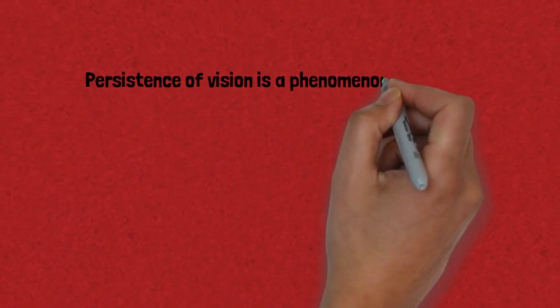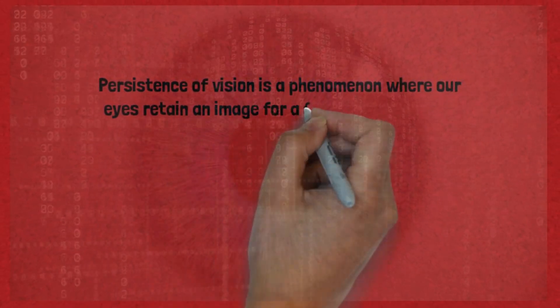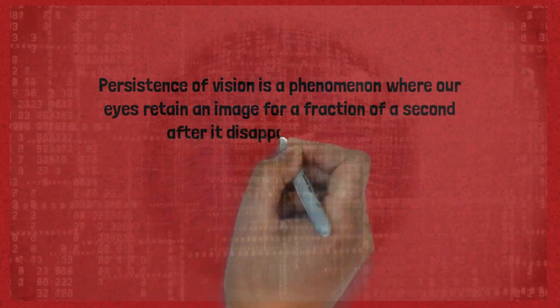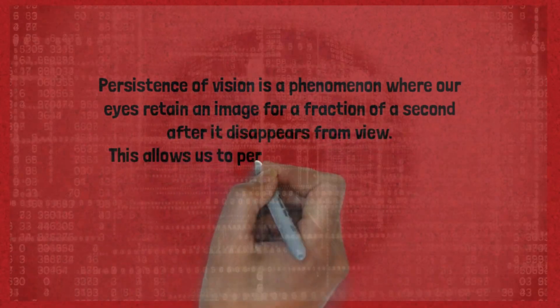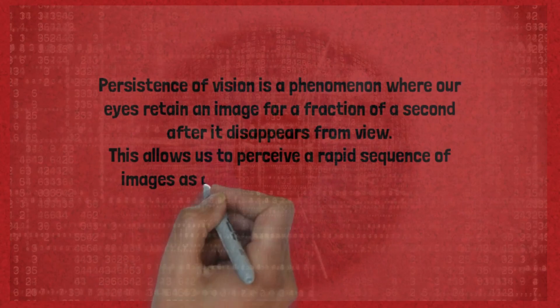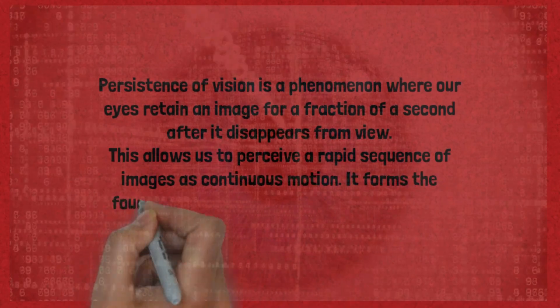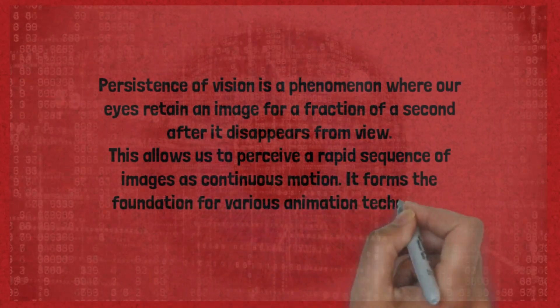Persistence of vision is a phenomenon where our eyes retain an image for a fraction of a second after it disappears from view. This allows us to perceive a rapid sequence of images as continuous motion. It forms the foundation for various animation techniques, including the zoetrope.